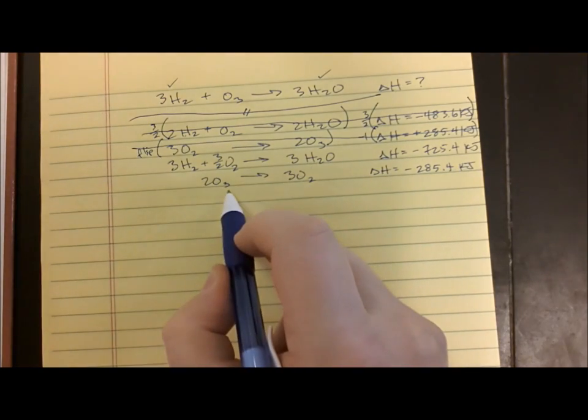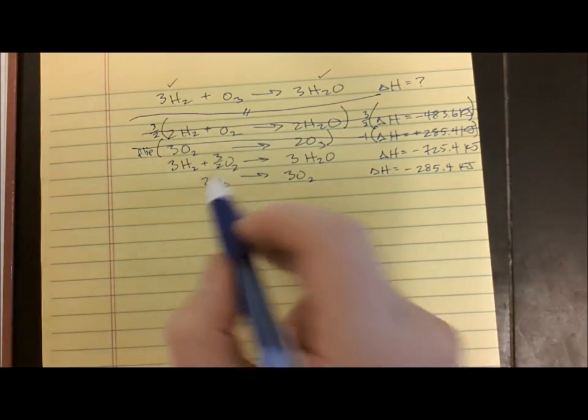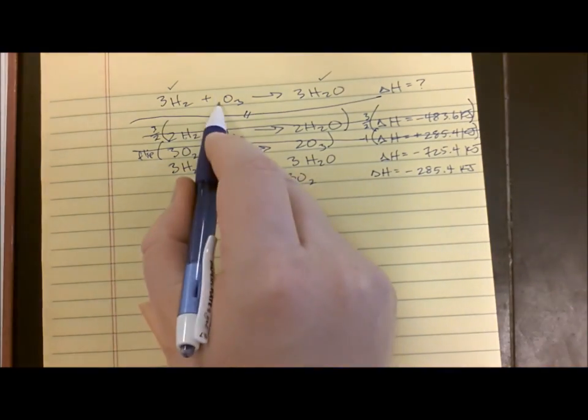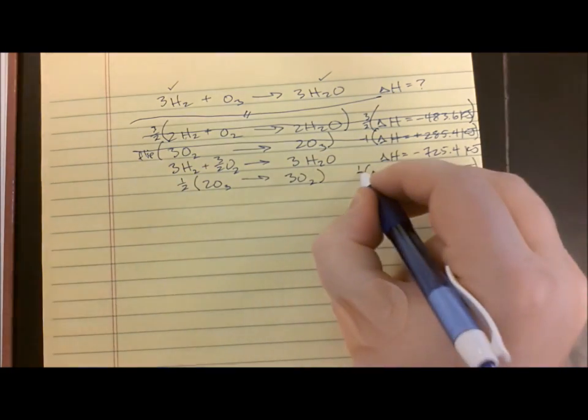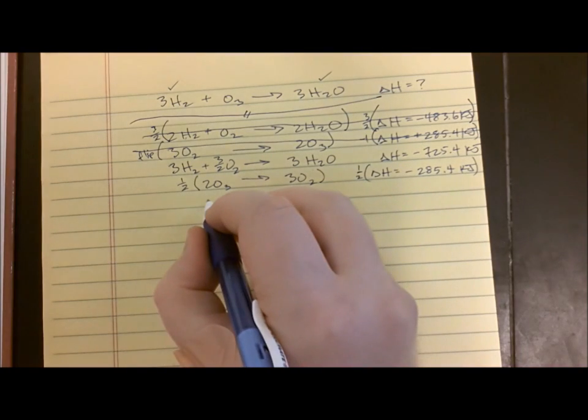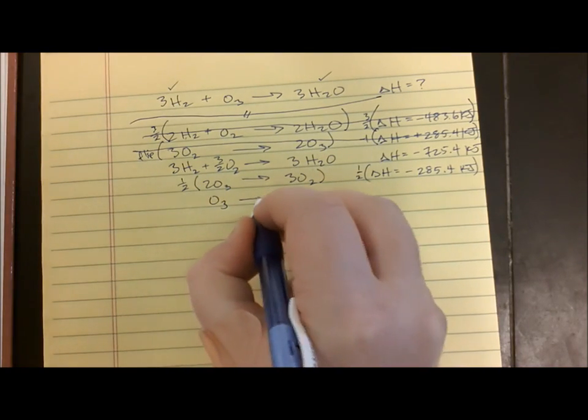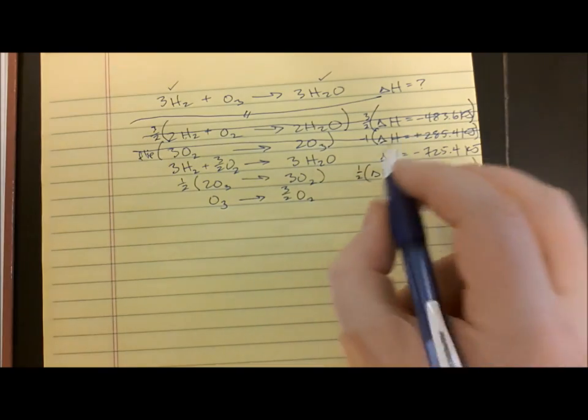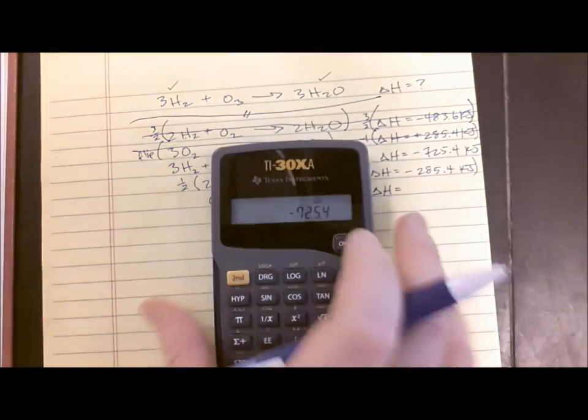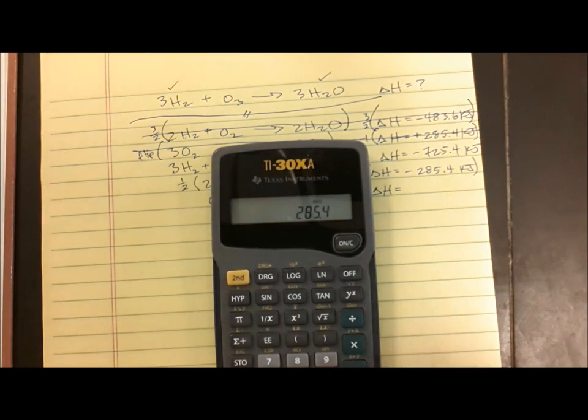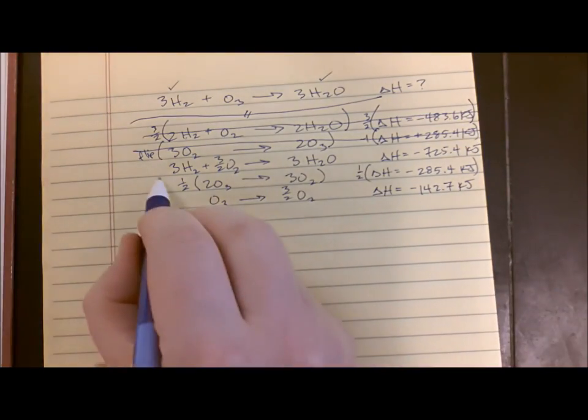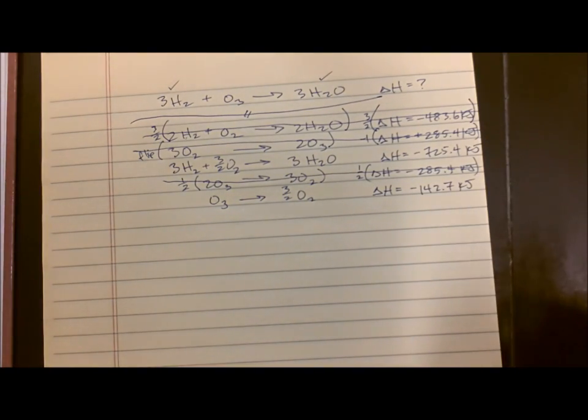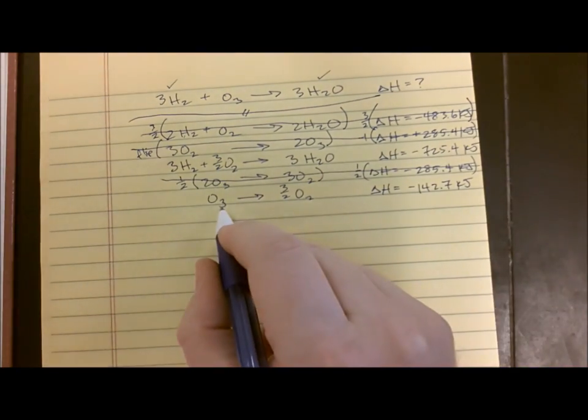Now the ozone is on the proper side, except that the number in front of it is wrong. So how do I get the 2 to become a 1? I will multiply it by one half. That gives me three halves of an oxygen over here. Delta H equals 285.4 divided by 2 is negative 142.7 kilojoules. Put a line through it because I've changed it. That gives me my ozone on the proper side.